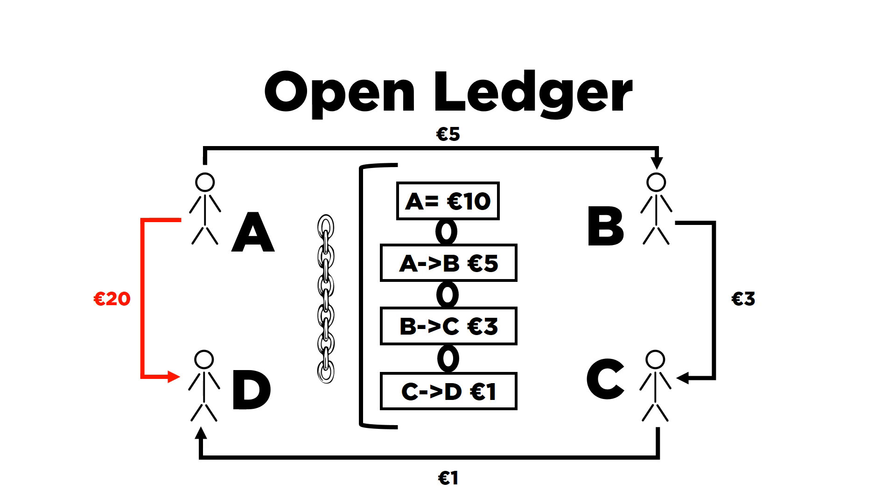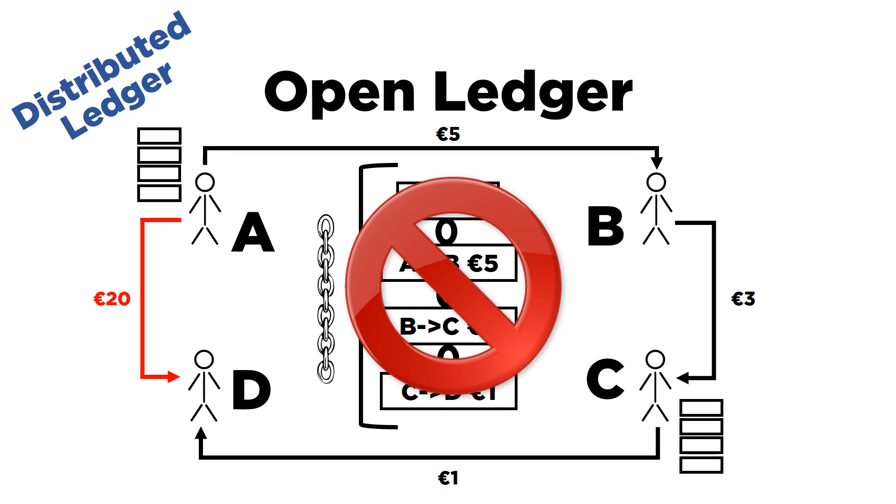The second principle of blockchain is decentralization. Right now, this open ledger seems centralized. To change this, blockchain provides a distributed ledger. It takes the centralized open ledger and distributes it, so anyone in the network can have the copy of the ledger. And this eliminates the need for a centralized trusted entity.